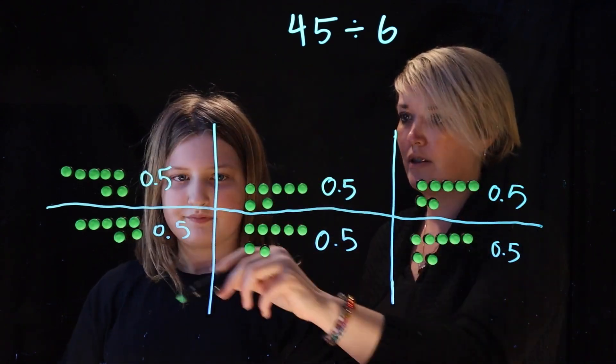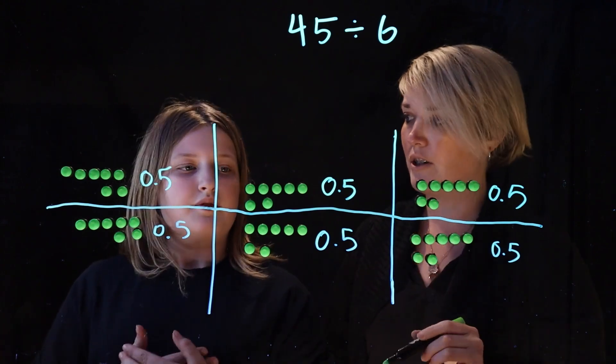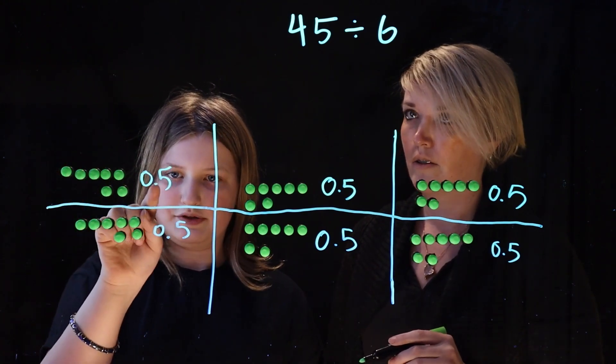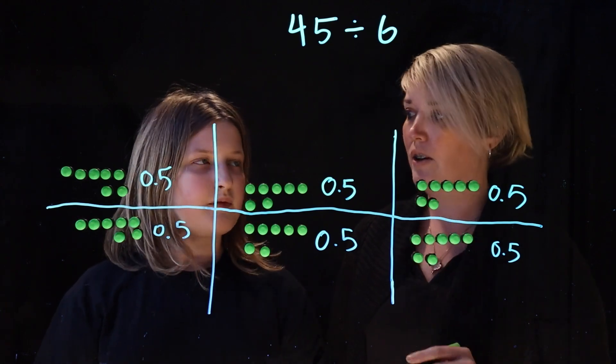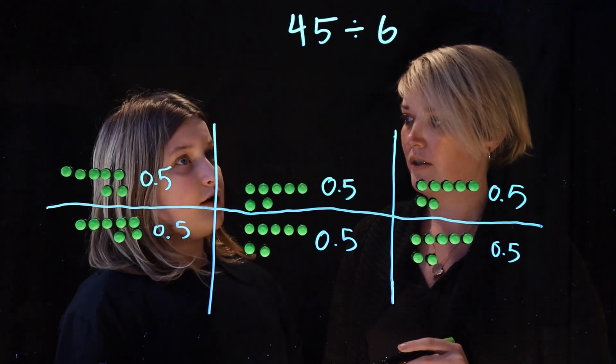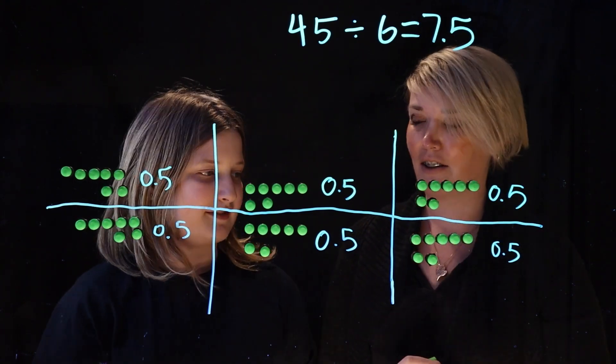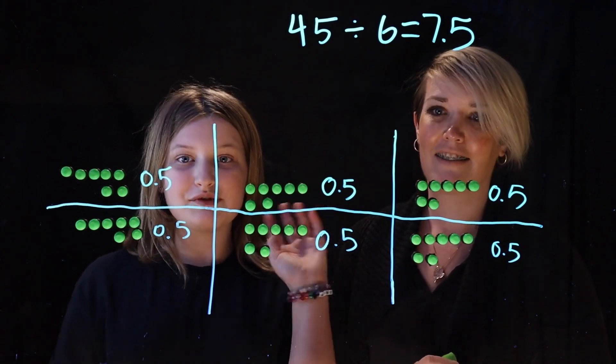Okay, we have 6 groups and they all have how much in each one? Well, 7.5. Okay, so 45 divided by 6 equals? 7.5. Awesome. Great thinking, Hannah. Thank you. Bye, everyone.